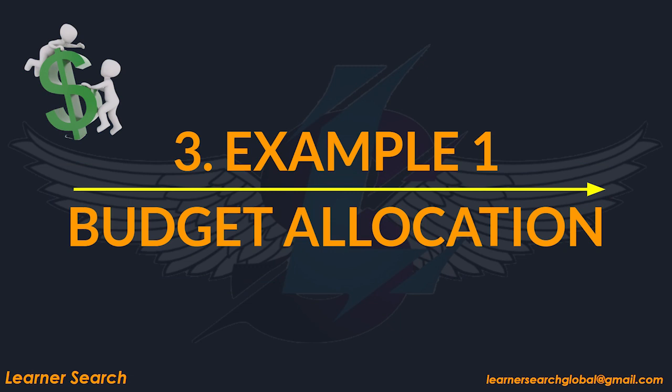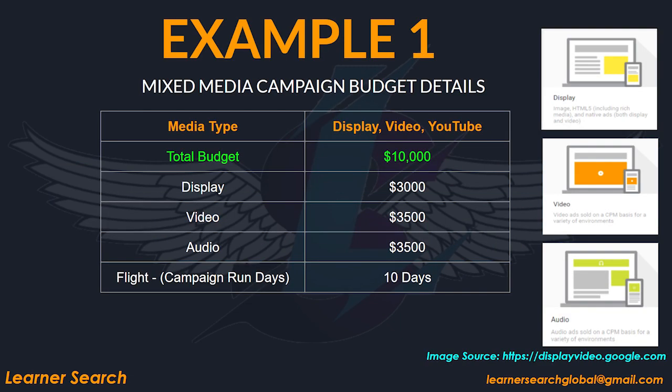Let's take example one. Let's assume the following information with a mix of media types to construct a campaign in DV360. Display, video, and YouTube are the media types in which you want to spend the budget. The campaign total budget is $10,000. According to the media plan, the entire budget should be divided as follows: $3,000 for display, $3,500 for video, and $3,500 for audio.